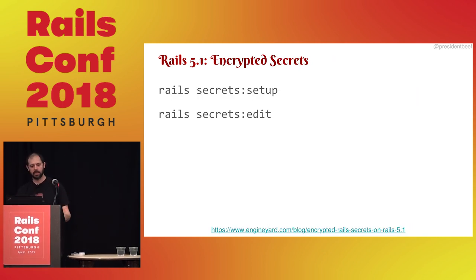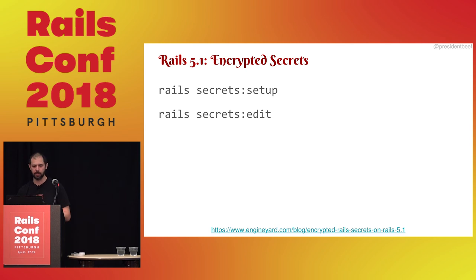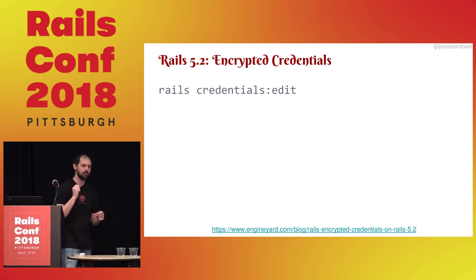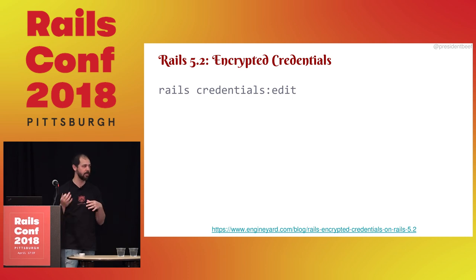5.1 added encrypted secrets — there was a talk yesterday from Christopher Rieger who also wrote blog posts about it. Now you can encrypt your secrets. 5.2 said never mind, encrypt your credentials instead. Christopher mentioned this is still an ongoing discussion, so in 5.3 maybe you'll see this changed again. But it's great that people are thinking about ways to safely store credentials along with source code.